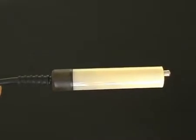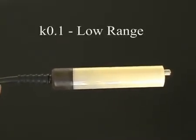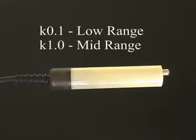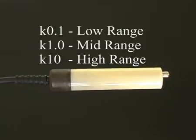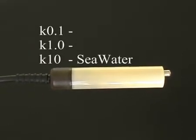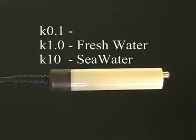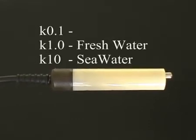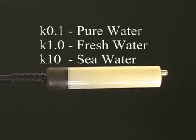Conductivity sensors are available in three ranges: K.1 low range, K1 mid-range, and K10 high-range. The K10 is used for seawater, the K1 is used for freshwater, and the K.1 is used for pure water.